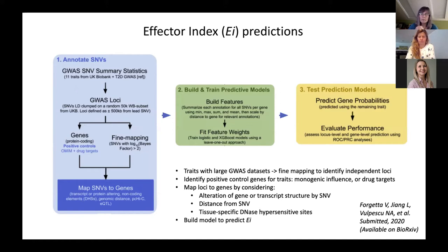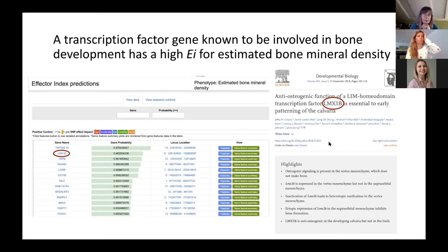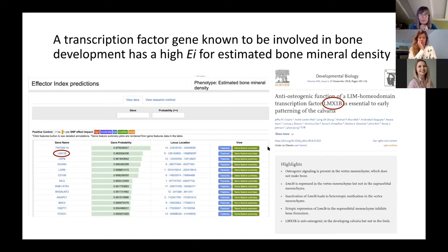Gathering information on all these criteria for the variants, they built a model that would predict the EI, or effector index. One example showing validation of the method: for estimated bone mineral density, the second highest ranked gene is LMX1B. I don't think this gene is really a top hit as far as genetic associations go, but if you do a PubMed search for it, there's a lot of literature about its involvement. It encodes a transcription factor and does seem to have a role in bone development. This is a really interesting kind of validation of the method.